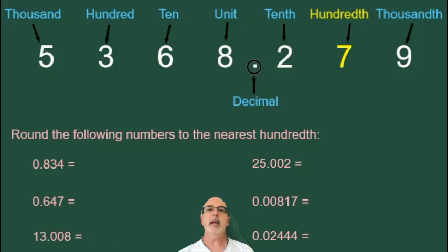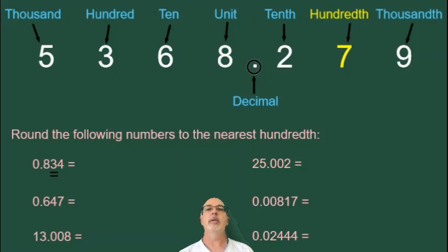In the first example, we have 0.834. The 3 is in the hundredth position, and the number to the right of it is a 4, which is less than 5, so we're rounding down. 0.83 is our answer, rounded to the nearest hundredth.